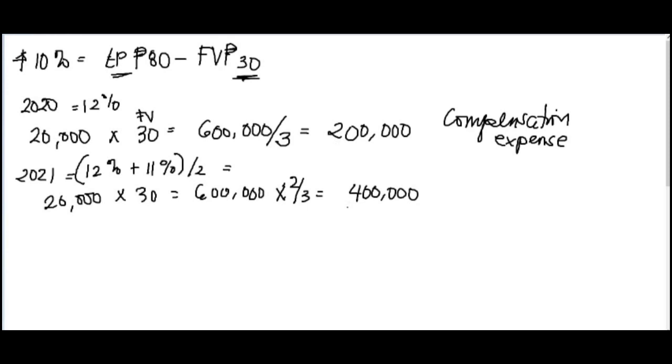So since this is for 2 years, what you need is for 1 year only, subtract what you recognized last year. Because this 200,000 is included in the 400,000. So subtract 200,000. You have current compensation expense for 2021 of 200,000. Understand?